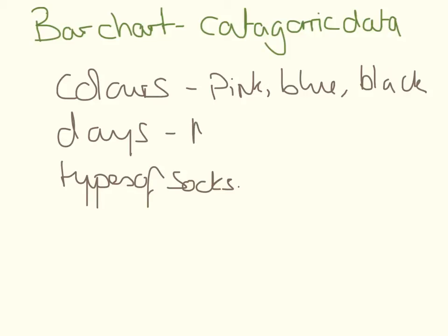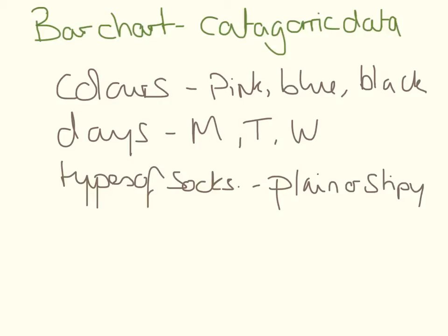With days, it can be Monday, Tuesday, or Wednesday — it can't be Monday and a half. And with types of socks, we can be plain, stripy, flowery, or spotty, but we're either one type of sock or another. So with categorical data, you're either something or you're something else — there are no in-betweens.